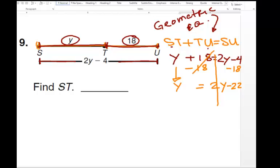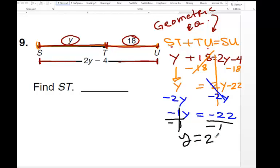Next you would cancel out the 2Y. So Y minus 2Y is negative 1Y equals negative 22. You divide everything by negative 1, so Y equals 22.